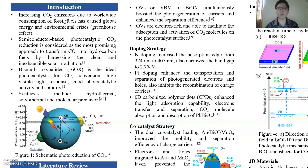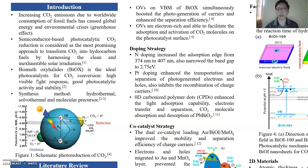The carbon dioxide emission has been increasing tremendously throughout the years and has caused many problems due to their greenhouse effect. The semiconductor-based photocatalytic CO2 reduction is considered the most promising approach, as it will convert carbon dioxide into valuable energy fuels by harnessing unlimited sunlight. The bismuth oxyhalide is the ideal catalyst for this process due to their high visible light response, good activity, as well as stability.